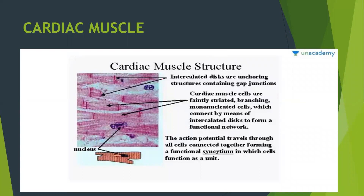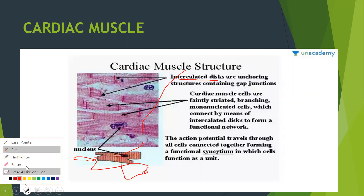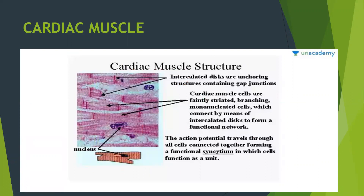Then we come to cardiac muscle. These cardiac muscles have intercalated discs — they are present in the wall of the heart. They are faintly striated, cylindrical, branched, and uninucleated. As they are branched, they are connected by intercalated discs to form a functional network. In cardiac muscle, the action potential travels through all the cells connected together, forming a functional syncytium — meaning the whole muscle acts as one unit.